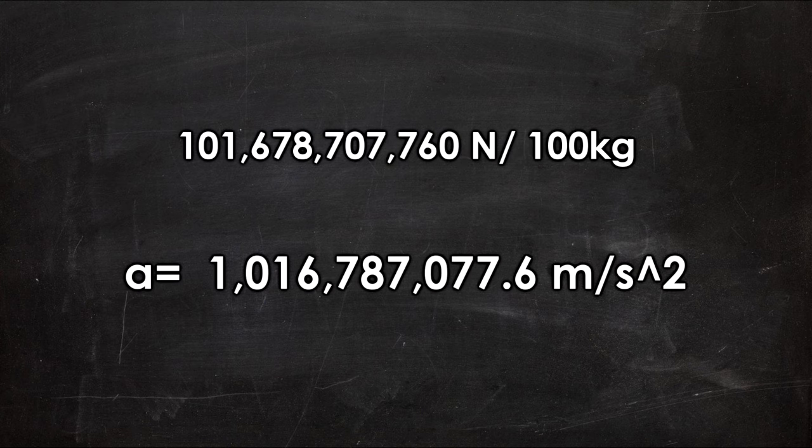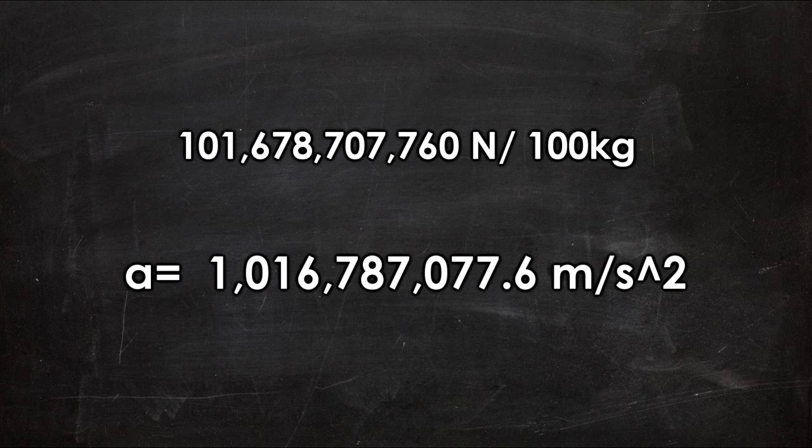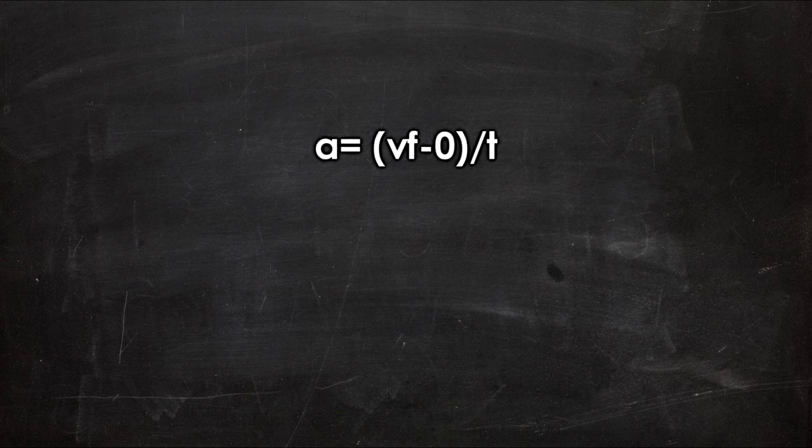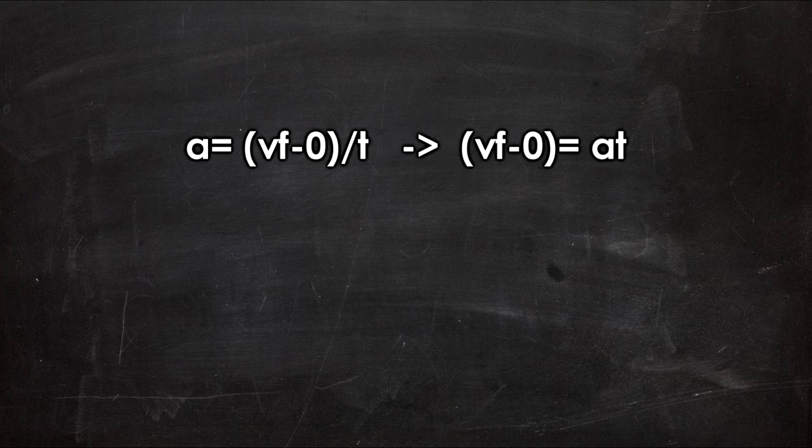This gives us an acceleration of 1,016,787,077.6 meters per second squared. We then want to find the final velocity by converting the equation acceleration equals change of velocity over time to change of velocity equals acceleration times time.